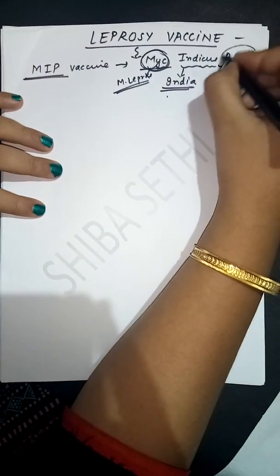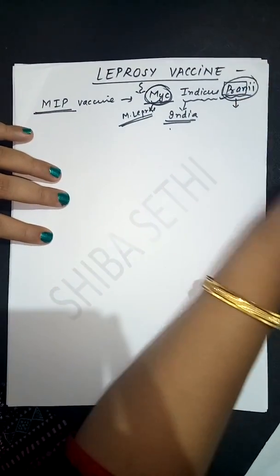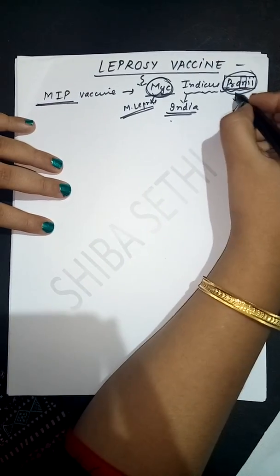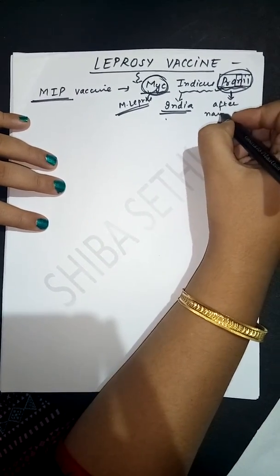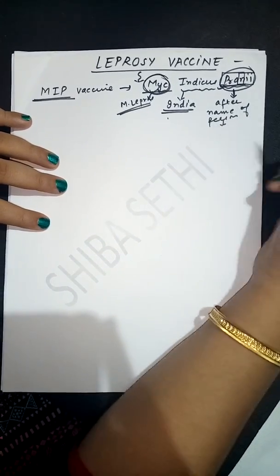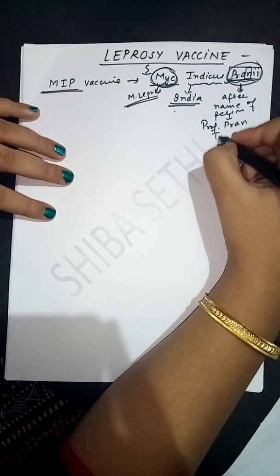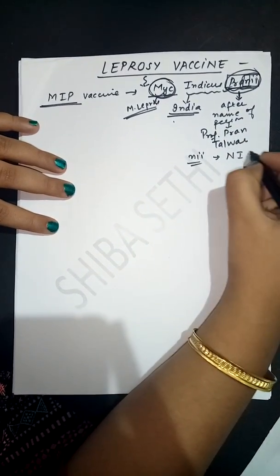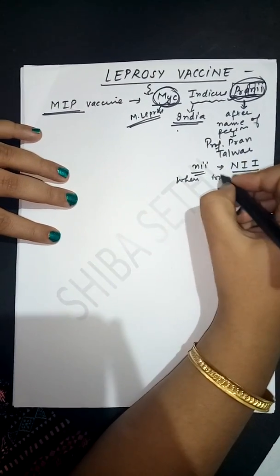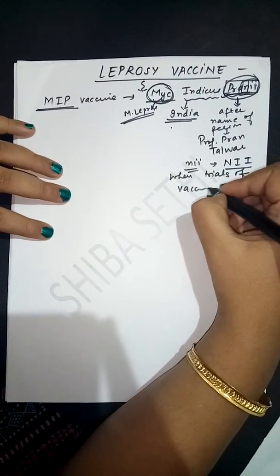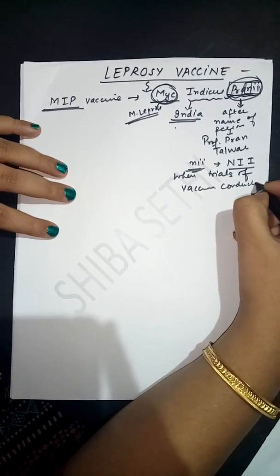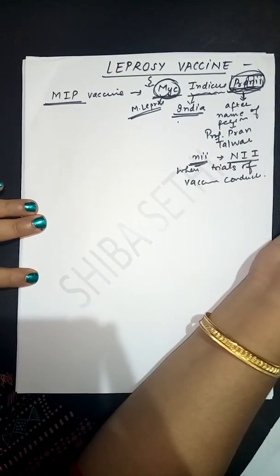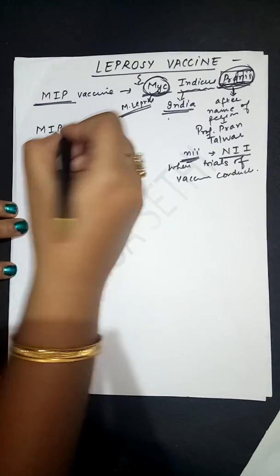The bacterial species used for making this vaccine is from India, so 'Indicus' is used. 'Prani' comes from two words — 'Pran' and 'NI'. 'Pran' is used after the name of the person who discovered the species, that is Professor Pran Talwar. 'NI' indicates the National Institute of Immunology, where trials of the vaccine were conducted. So the entire name is Mycobacterium Indicus Prani. This MIP vaccine is made in India.